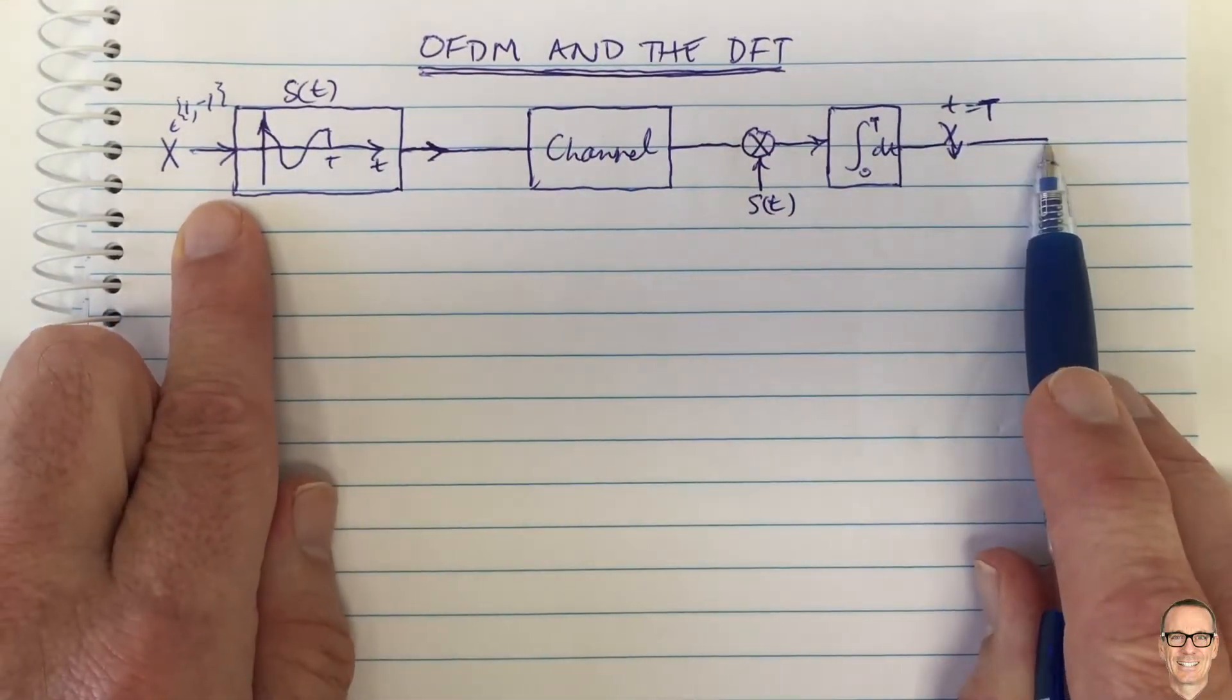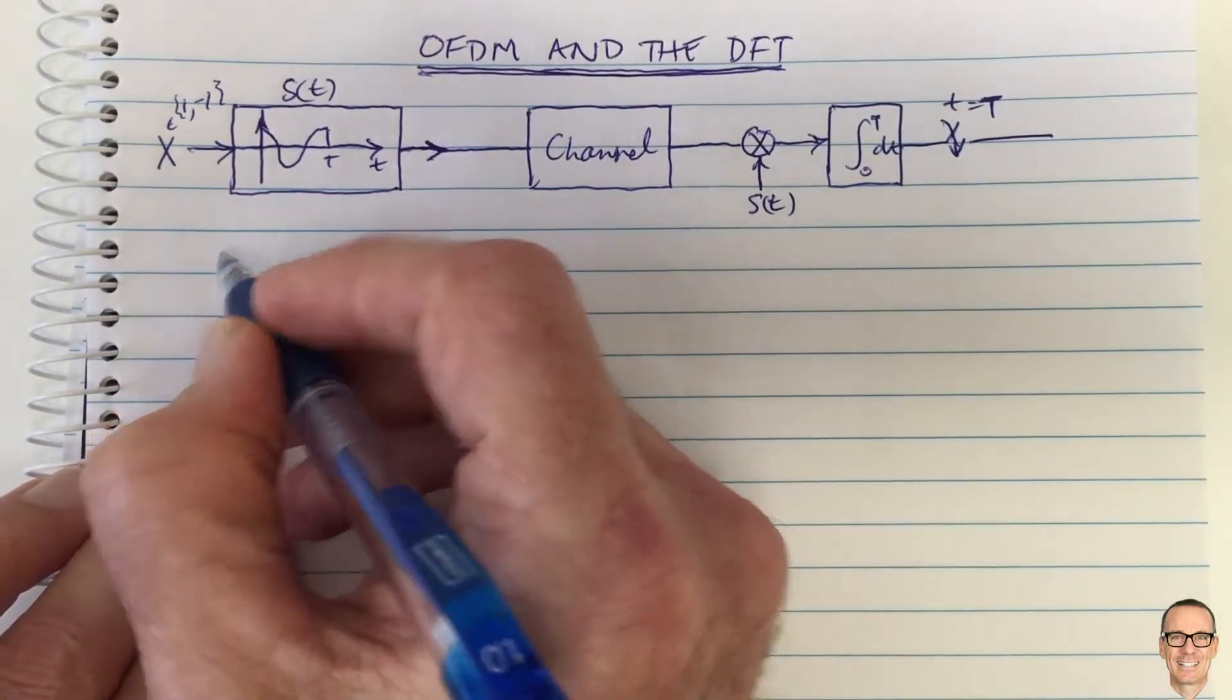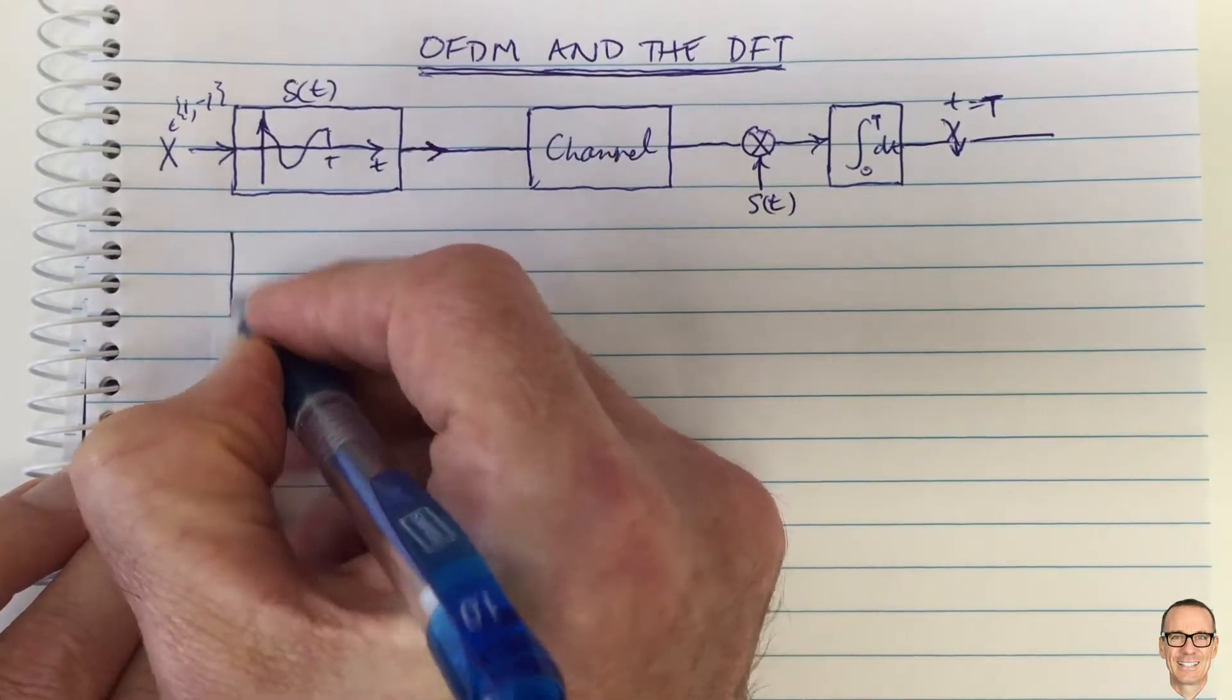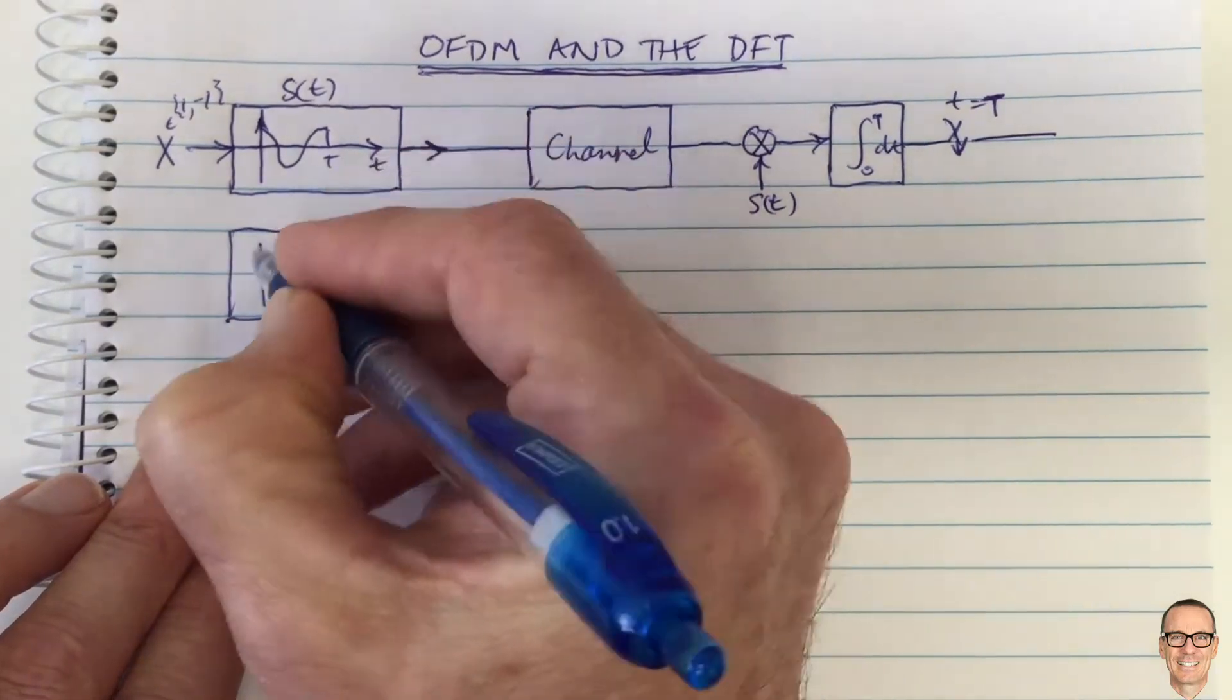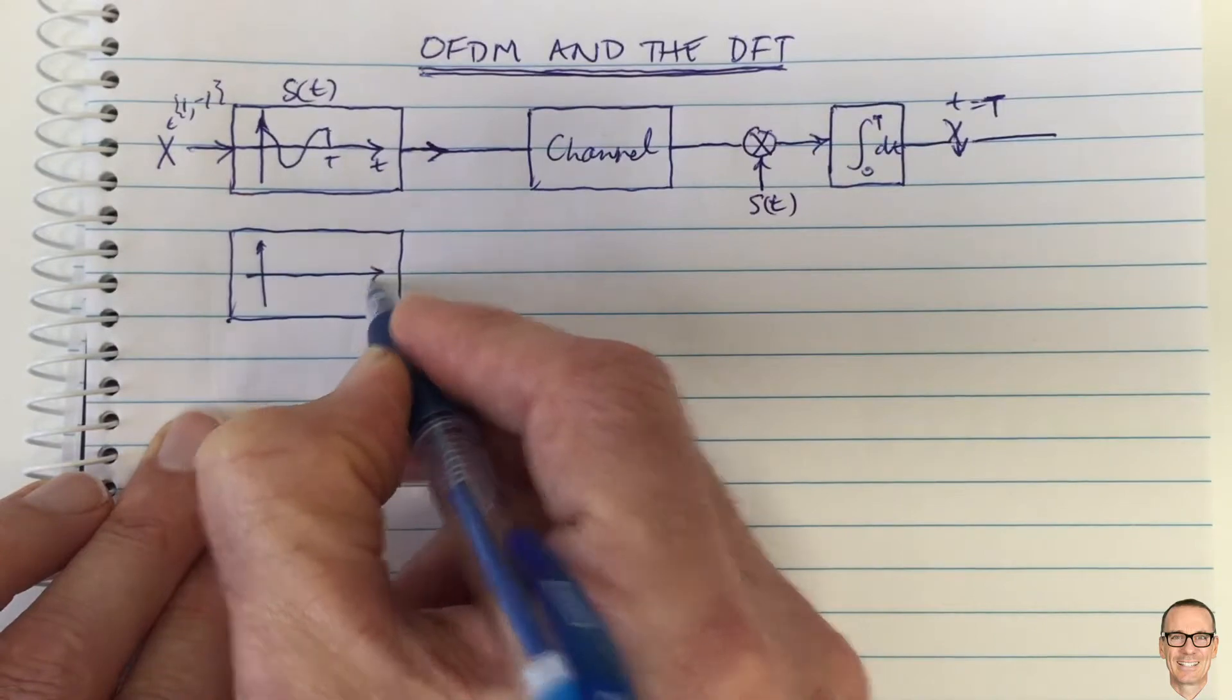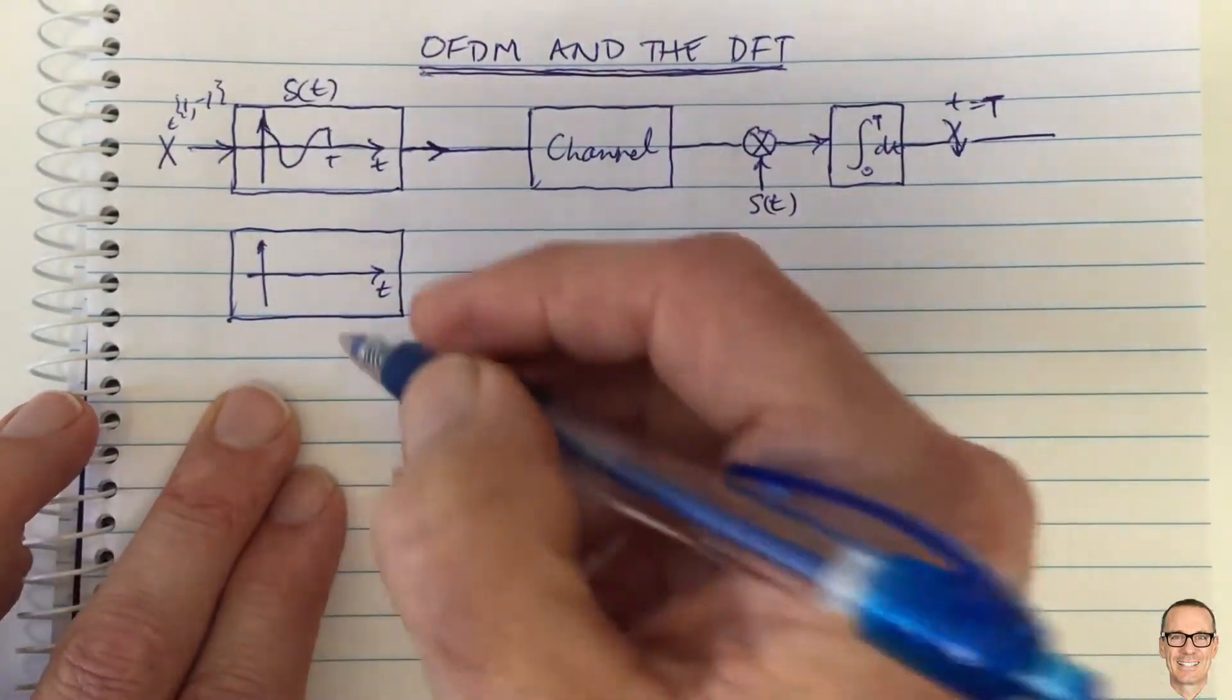This is what we would need to implement in a standard single-channel system. Let's think about what we might do to try to add another parallel orthogonal channel to this. If we pick a waveform which is orthogonal to the first waveform—and if you want to know more about this, I've just posted a video on orthogonality of waveforms.